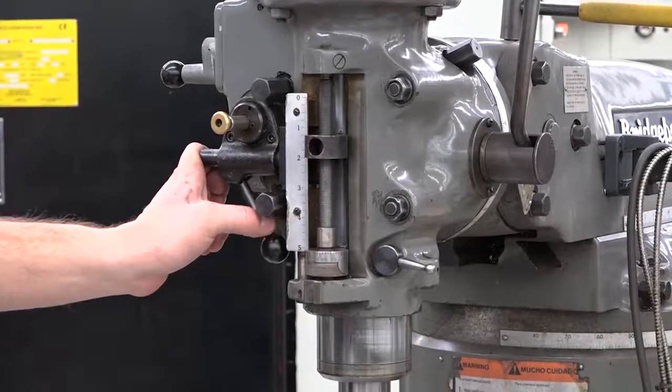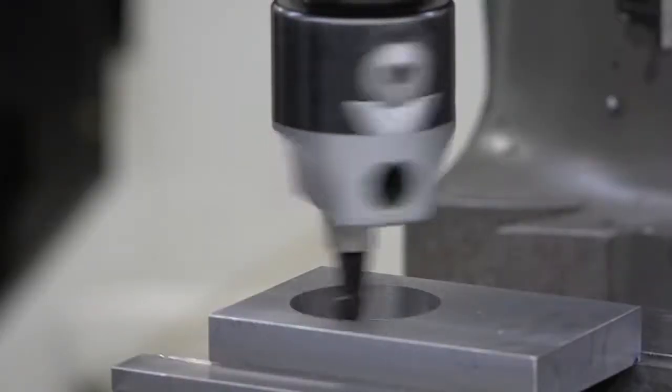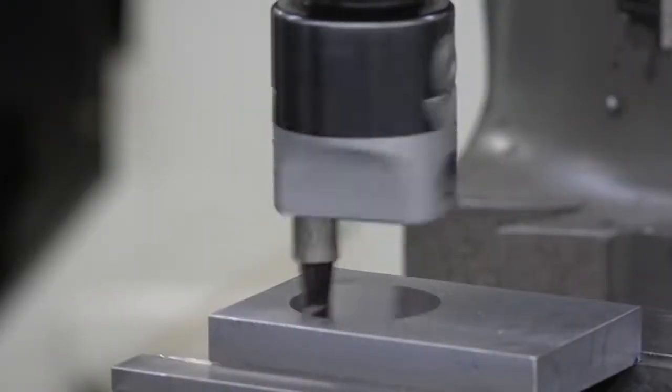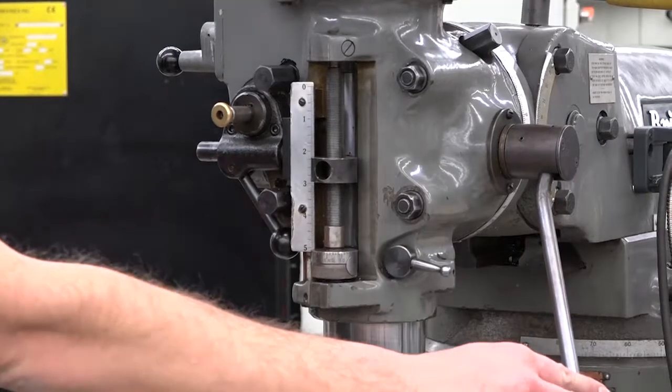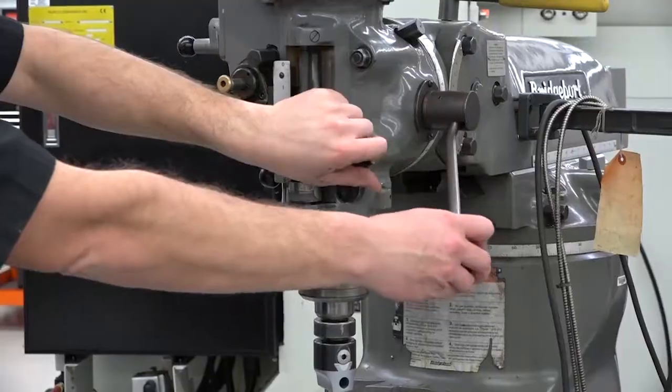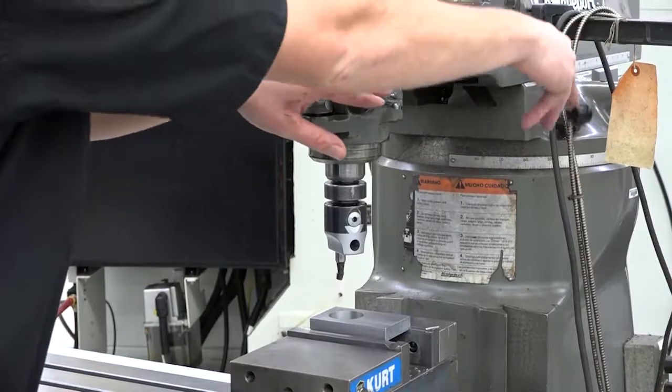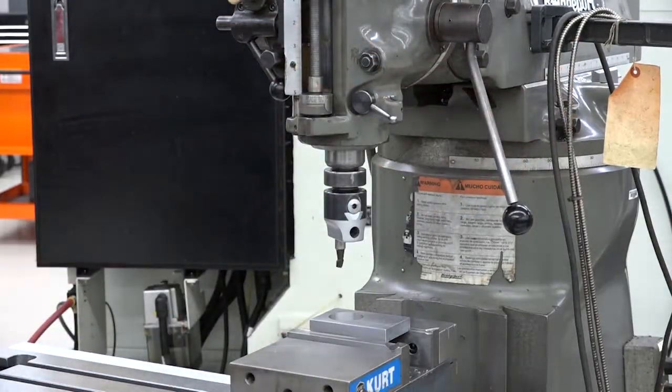Bring the tool close to the workpiece and engage the quill feed engage lever. Allow the tool to bore through the part. Disengage the quill feed engage lever and shut the spindle off. Raise the quill until the tool is above the part. If you do this while the spindle is still on, the tool will leave a groove in the part wall.